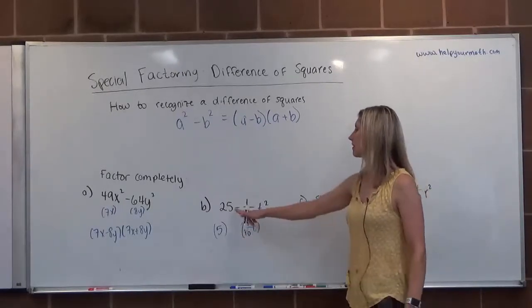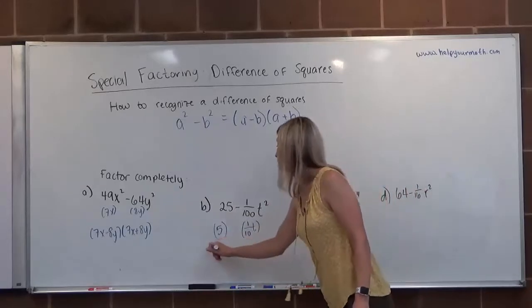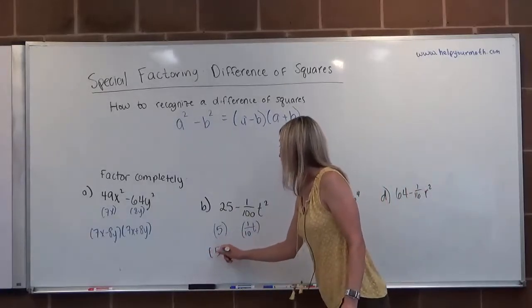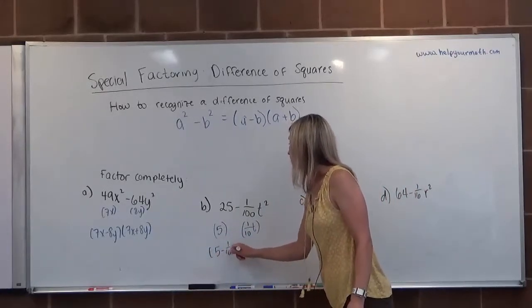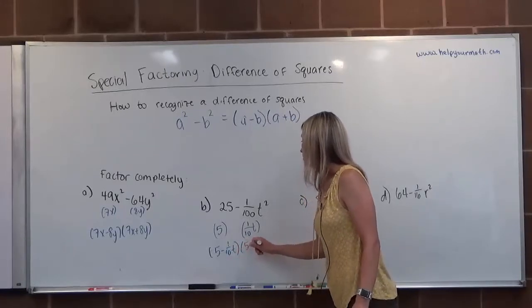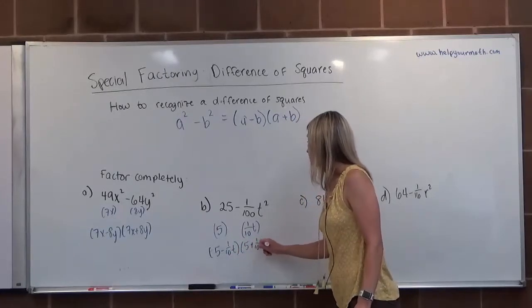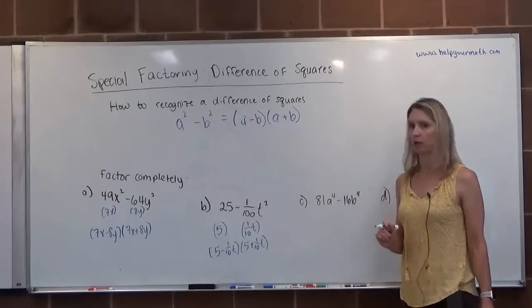Because they are both perfect squares and they're subtraction, it's a difference of squares. It would be root minus root times root plus root. And that would be the factoring for letter B.